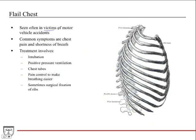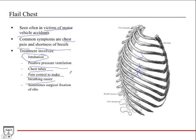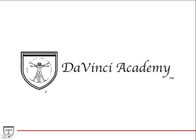Flail chest is often seen in victims of motor vehicle accidents from chest wall trauma. Common symptoms include severe chest pain and shortness of breath due to reduced efficiency of thoracic cage movement. Treatment often involves intubation or positive pressure ventilation, chest tubes if there is a pneumothorax, pain control to help the patient breathe more comfortably, and sometimes surgical fixation of the ribs if the fracture is severe or risks injuring vital structures. That concludes our discussion of the mechanics of respiration.